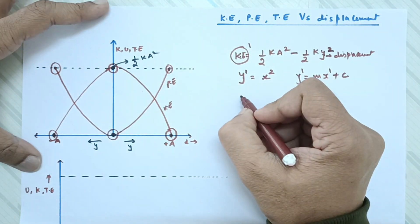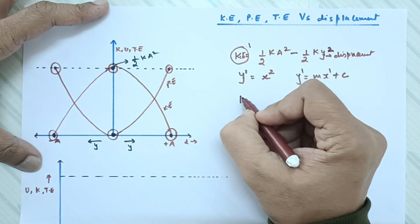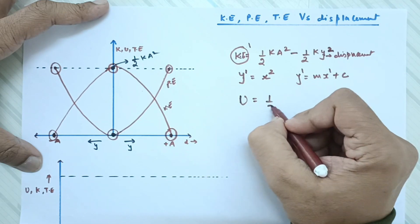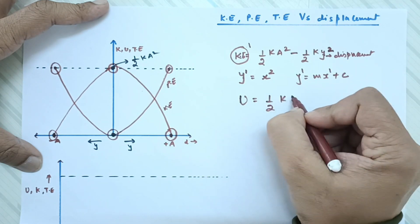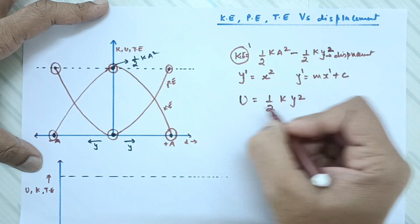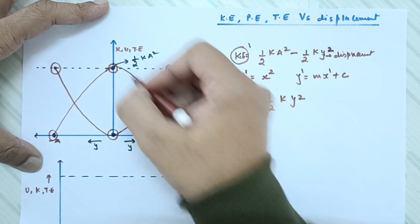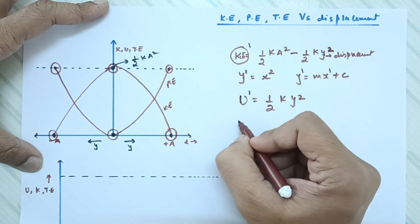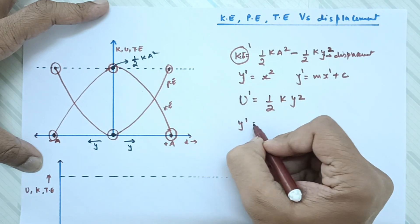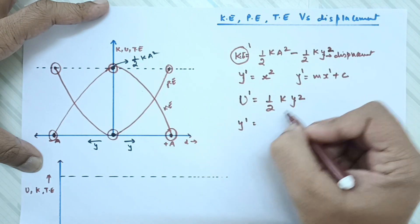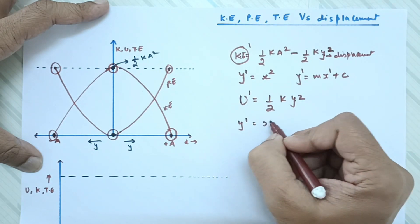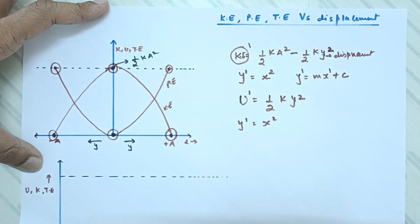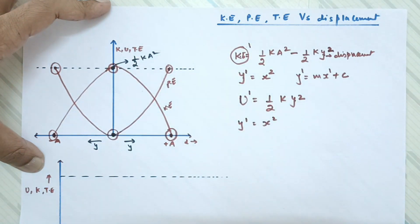In the same way, potential energy U equals half k y square. Energy is plotted on the y-axis to the power 1, and displacement is plotted on the x-axis to the power 2. So again, it has to be a parabolic graph.